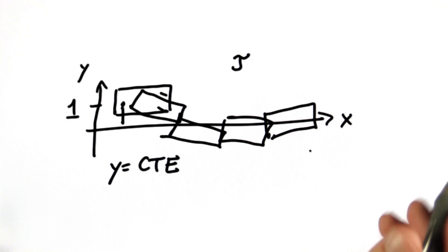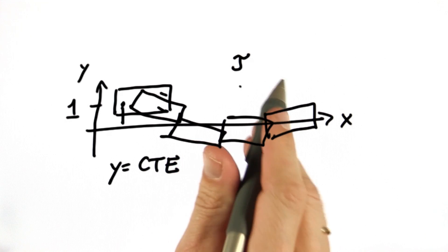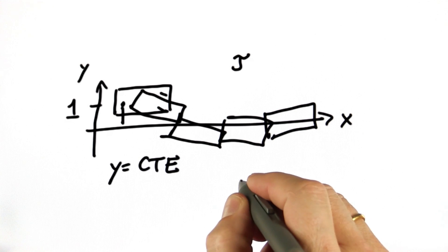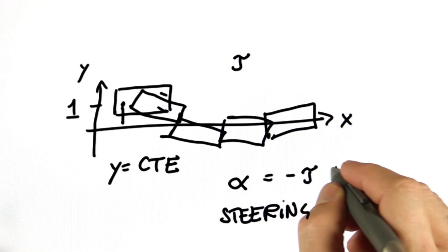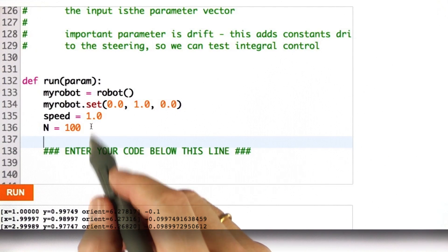To do this, simulate the robot for 100 steps and use a proportionality term that sets my steering angle alpha in proportion to the cross-track error y. So enter your code here.